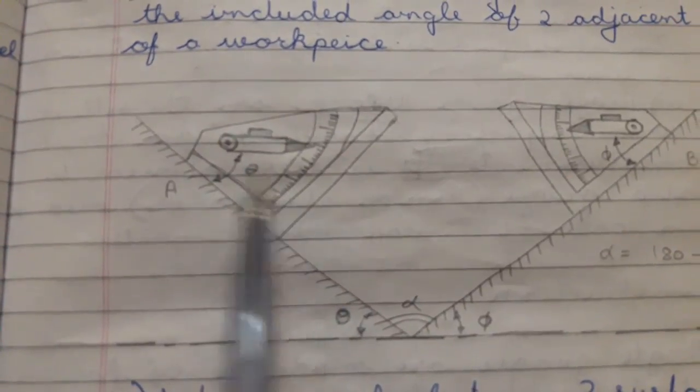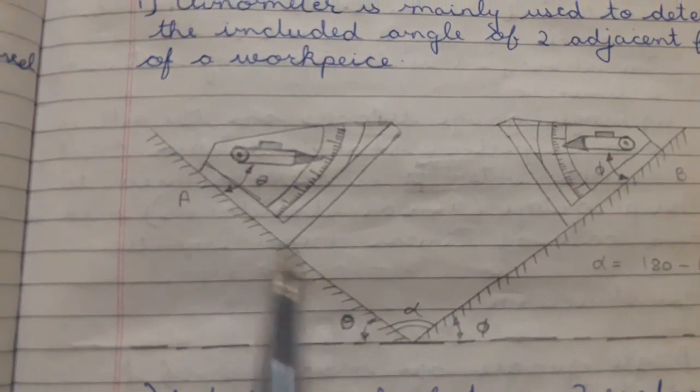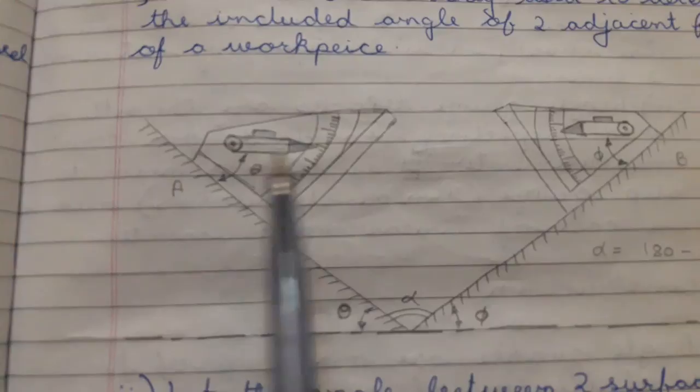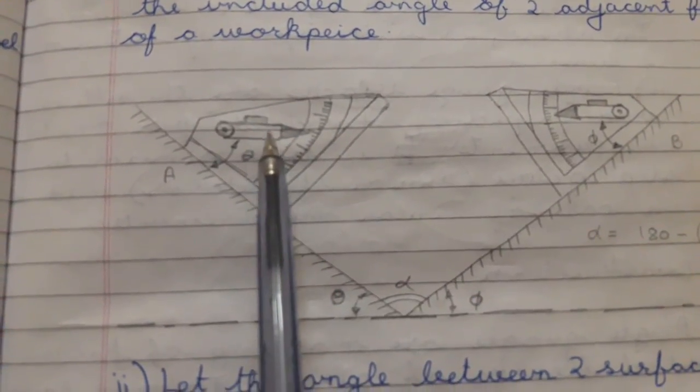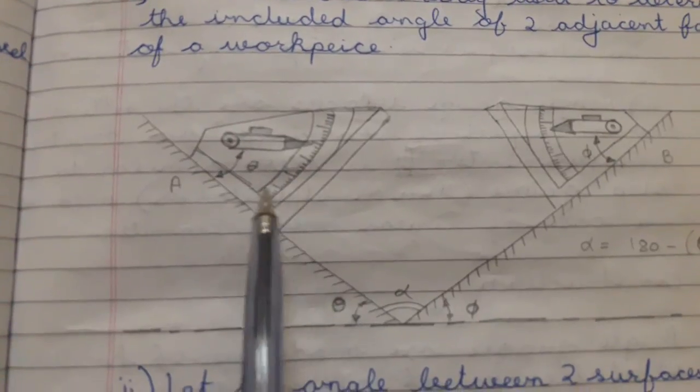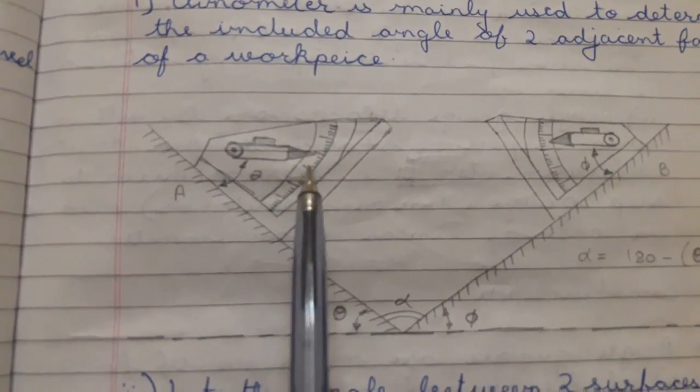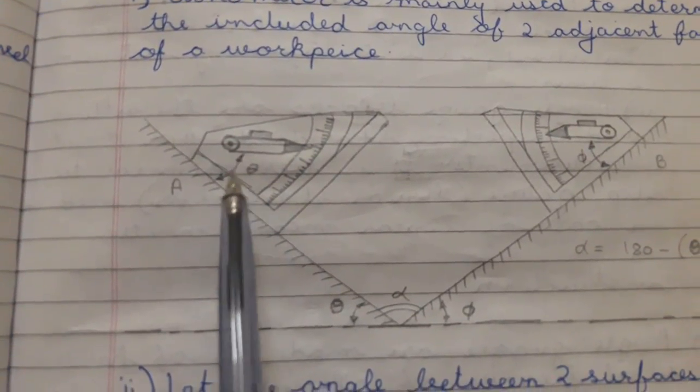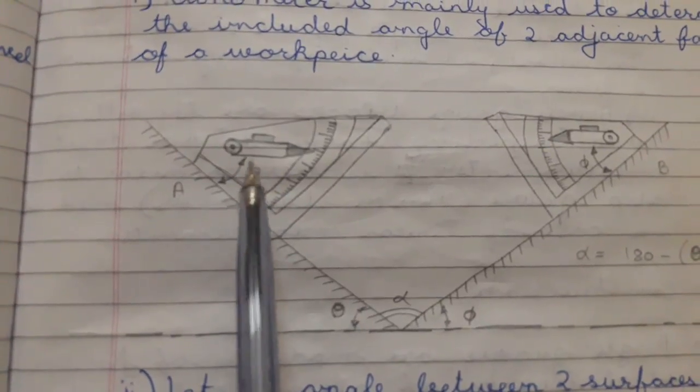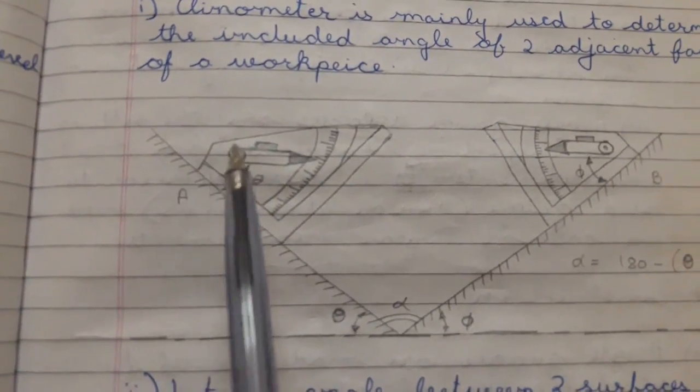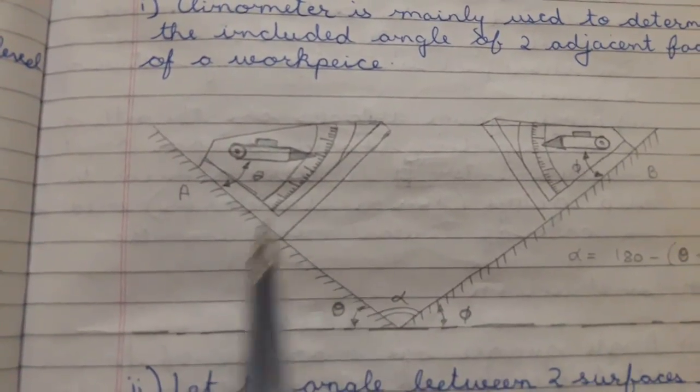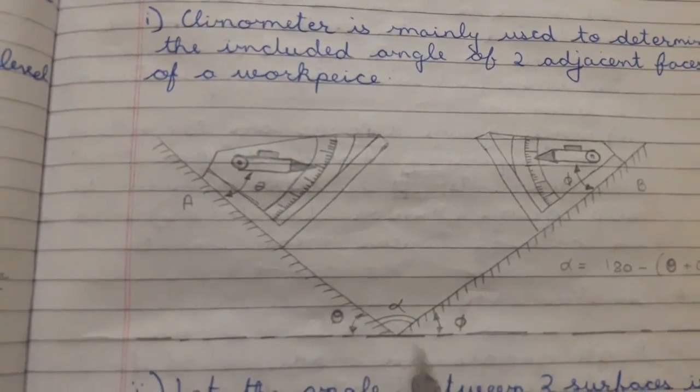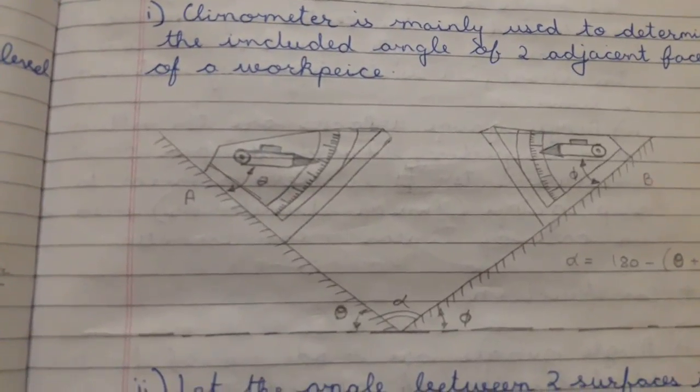First, put the Clinometer on surface A and adjust the rotary member till zero reading of the bubble is obtained. Note the reading of the circular scale and call it theta. This angle theta will also be the same by using the property of parallel lines. This is two parallel lines and this is transversal, so these two angles will be the same.